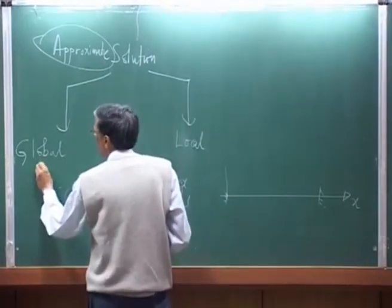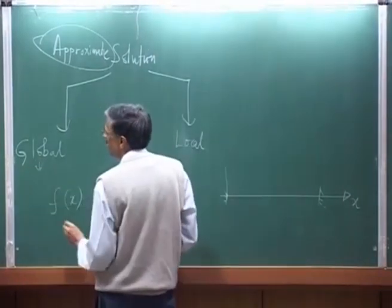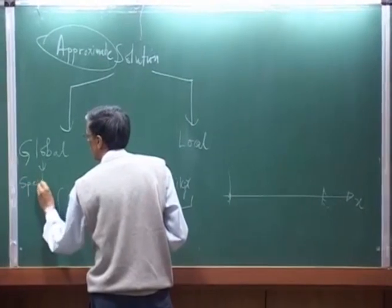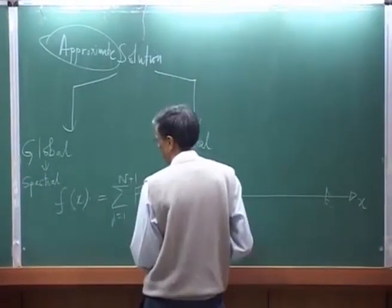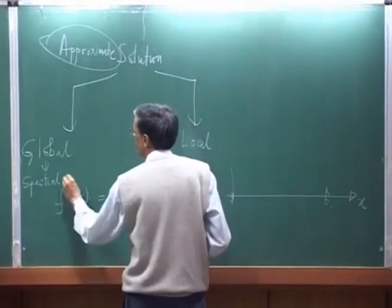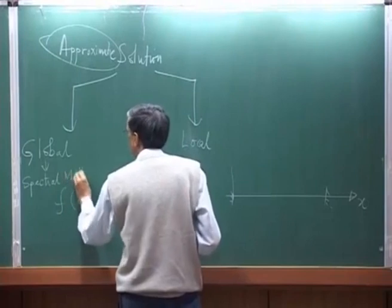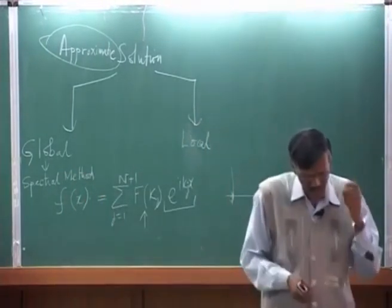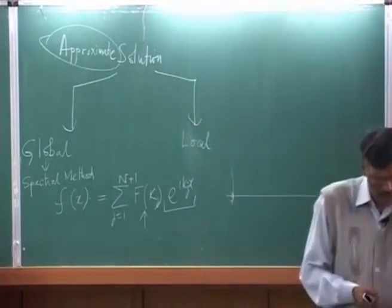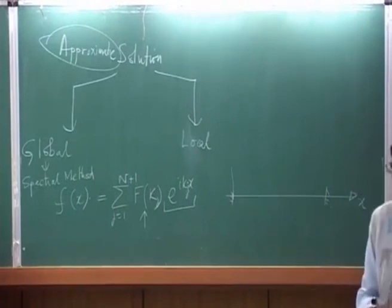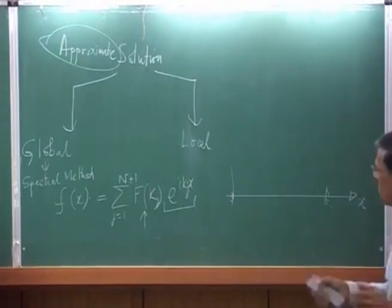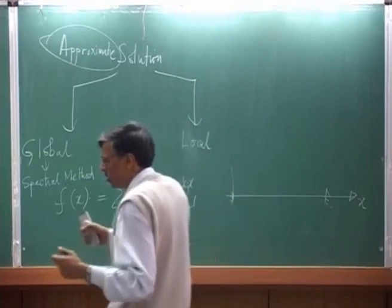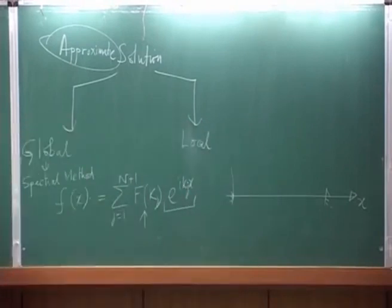One of the simplest examples of this is the spectral method — the Fourier spectral method. Now, there are plus points and minus points. The plus point is that when you apply a global method, you could take fewer terms and get very accurate solutions. For example, if I am trying to solve a differential equation, I may take 16 or 20 terms and find that gives me a pretty good solution.